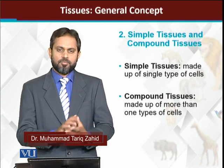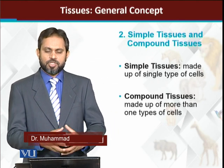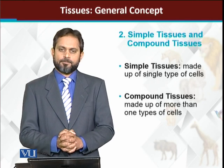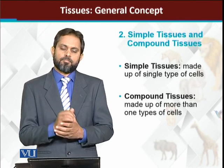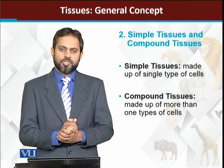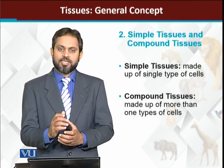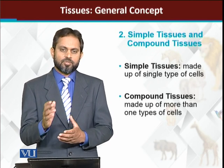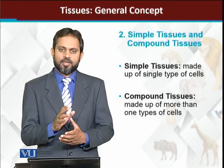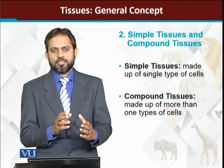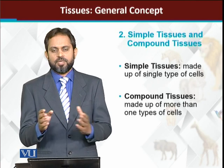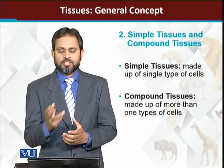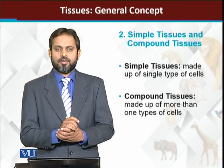If we look at tissues overall in terms of composition, we get two different categories: simple tissues and compound tissues. Simple tissues are those where all the cells making up the tissue are structurally the same — same structure, same function. For such tissues, we use the term simple tissues, because all their cells are alike.